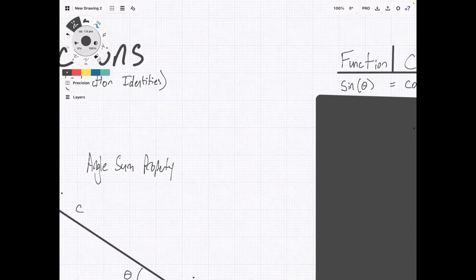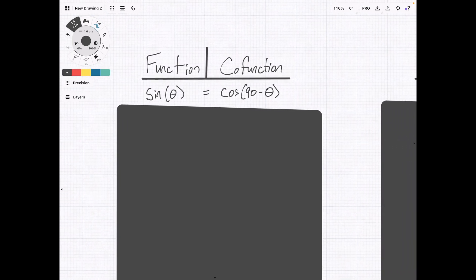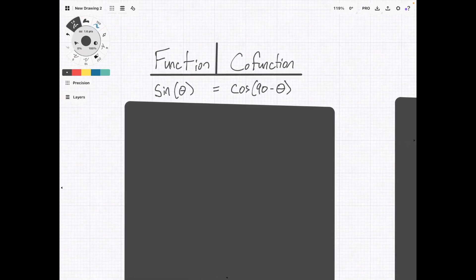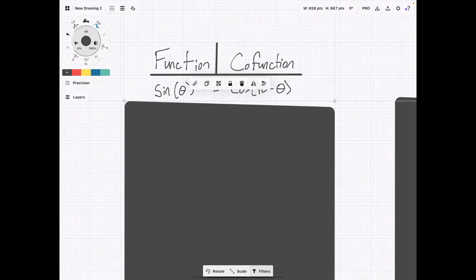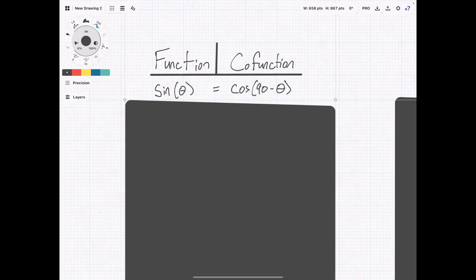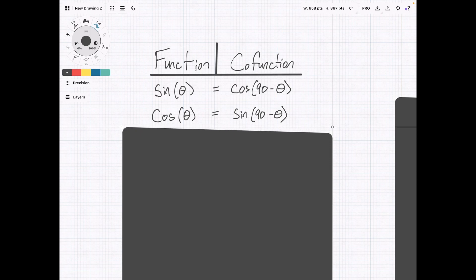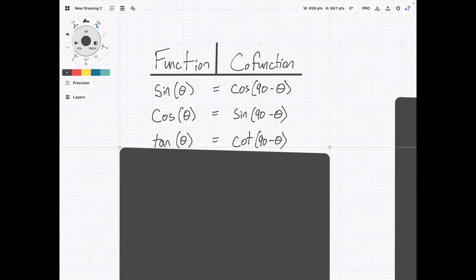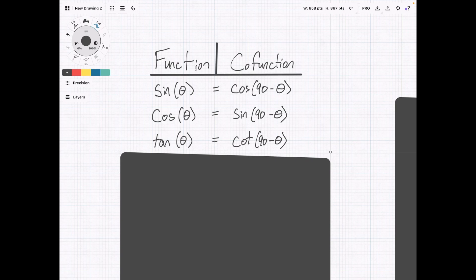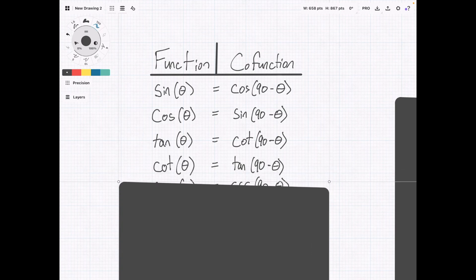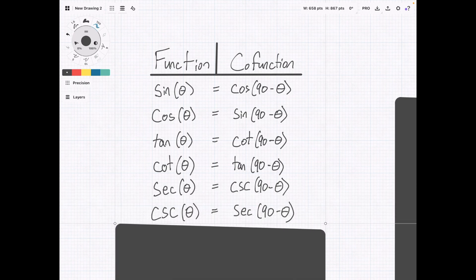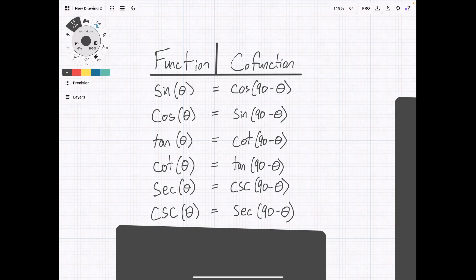If we jump over to this chart here, I've written out all of the different co-functions. So sine theta equals cosine of 90 minus theta. Cosine of theta equals sine of 90 minus theta. And then we have the remaining three trigonometric functions and their co-functions.